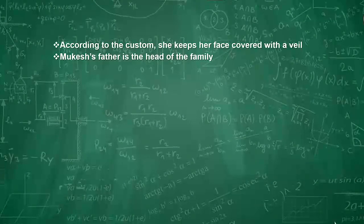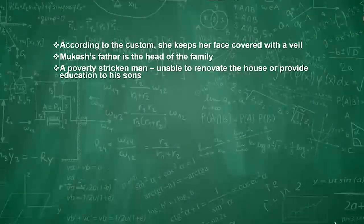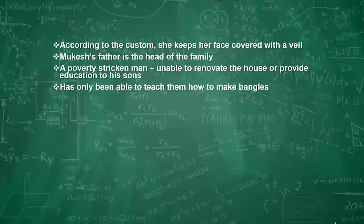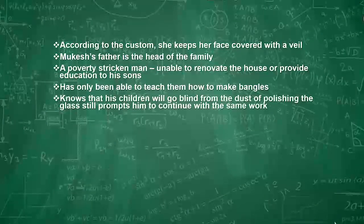As his father comes in, she brings her veil closer to her face. The old man is a poor bangle maker — even after long years of hard labor he has been unable to renovate his house or send his two sons to school. When the author talks to the grandmother and questions why they insist children join this hazardous profession knowing they will go blind from the dust of polishing glass...